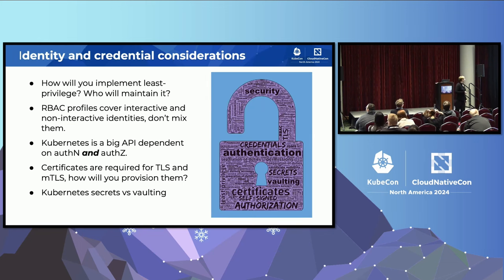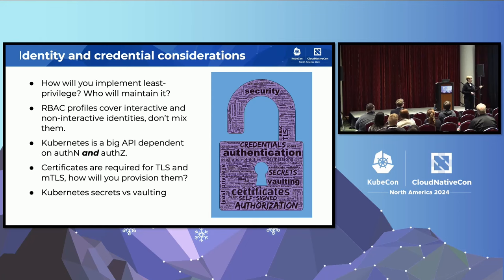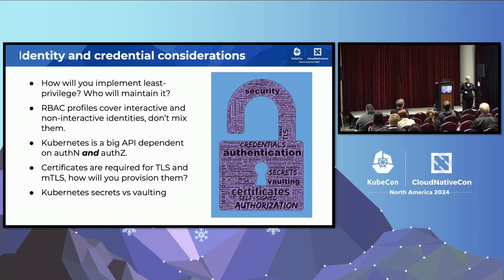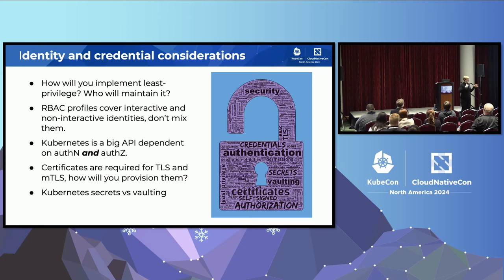RBAC. Least privilege and RBAC seems so easy on paper. Security will come to you and say, configure granular RBAC profiles. You go to the IAM team — they say that's not their problem, they don't know Kubernetes. You go to the security people — they say they're security engineering, they don't know Kubernetes, just do it right. I have literally sat in meetings where nobody would do the RBAC stuff, and it just dies right there. You've got to figure this part out.